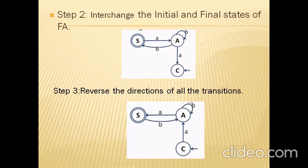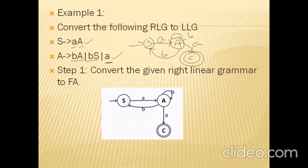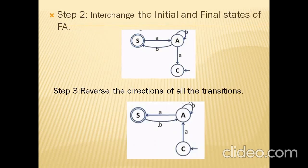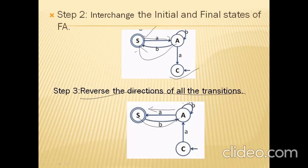The next step is to interchange the Initial and Final States. The starting state S becomes the final state, and the final state C becomes the starting state. Then we reverse the directions of all transitions: S to A with input A becomes A to S; A to S with input B becomes S to A; A to C with input A becomes C to A; and the self-loop A to A remains unchanged.